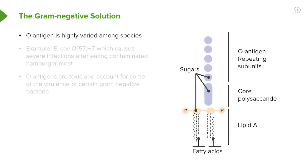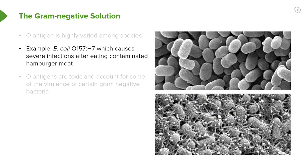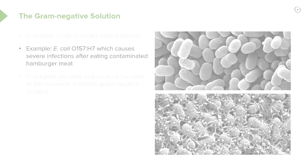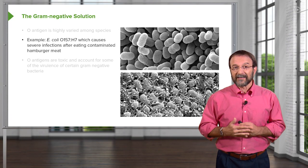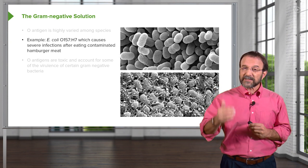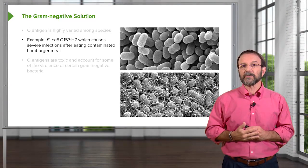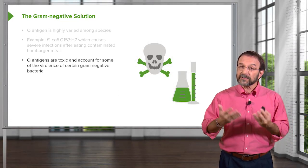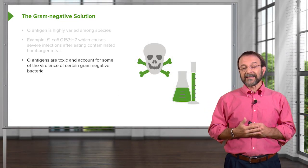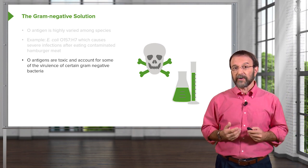O antigen varies highly between different species of bacteria. You may be familiar with a strain of E. coli called O157H7, which has been associated with outbreaks of diarrheal disease when people eat contaminated beef, typically from undercooked hamburgers. So the moral here is make sure your hamburger meat is well done. This strain of E. coli has a very specific kind of O antigen — this is why we call it O157. These O antigens are also toxic in themselves and can account for some of the virulence of gram-negative bacteria.